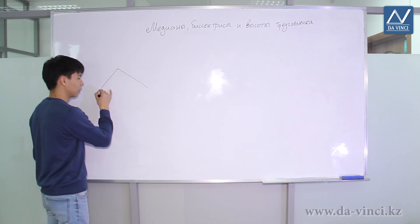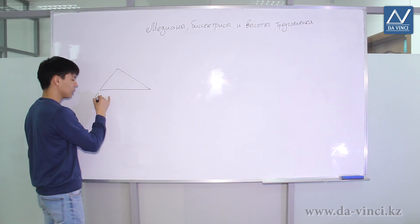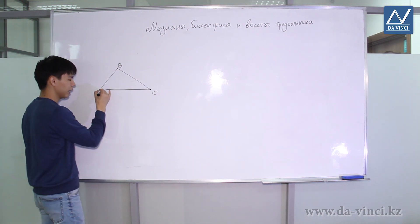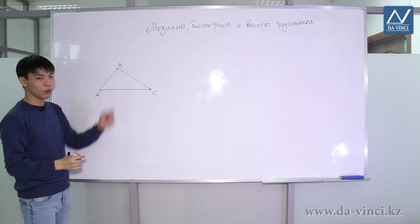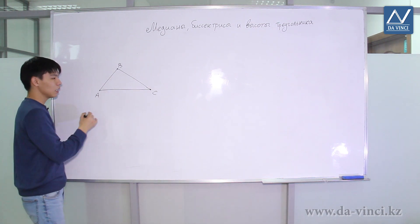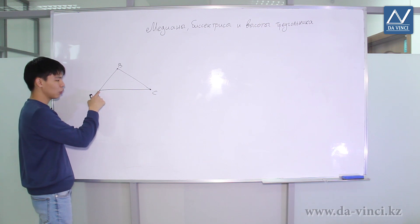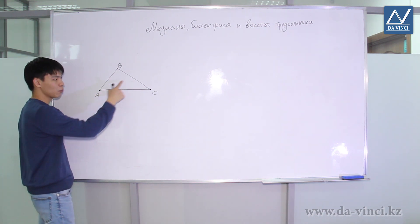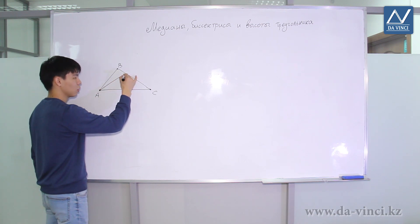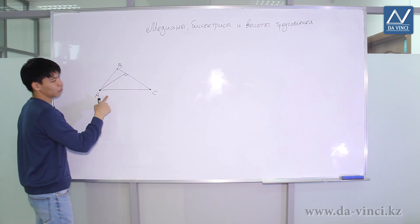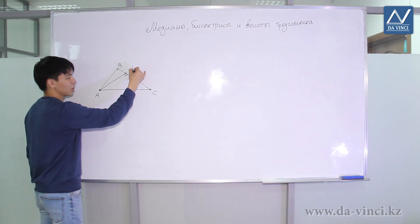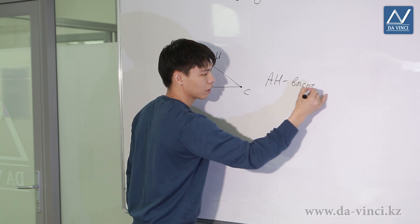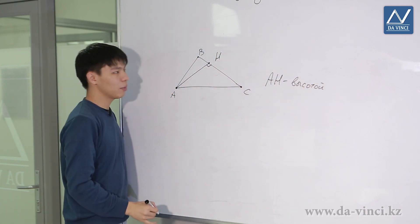The next concept is the altitude of the triangle. Let's have triangle ABC again, but this time let's make our triangle acute-angled, meaning all angles of this triangle will be acute. Then the altitude of the triangle is the perpendicular dropped from the vertex to the opposite side. For example, I can drop the perpendicular from point A to side BC — let's say this is point H — then the segment AH is called the altitude of the triangle.